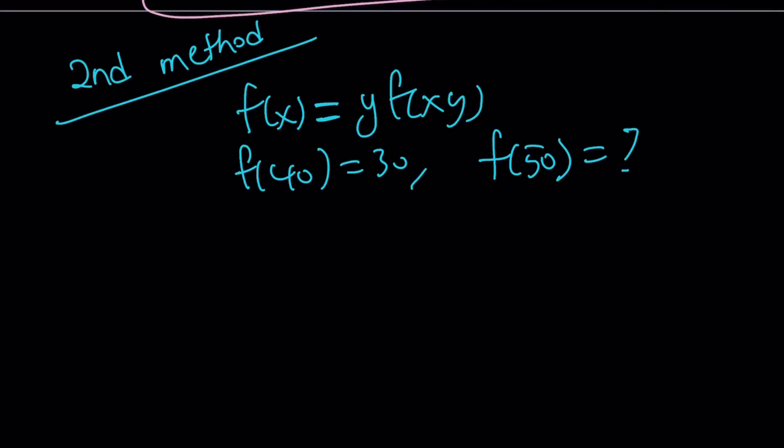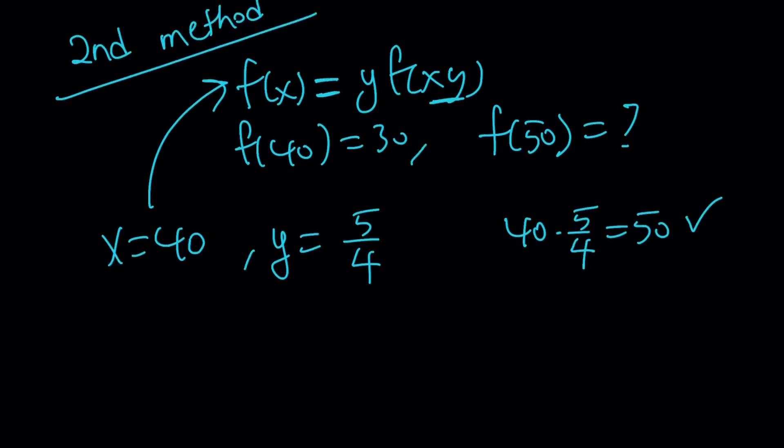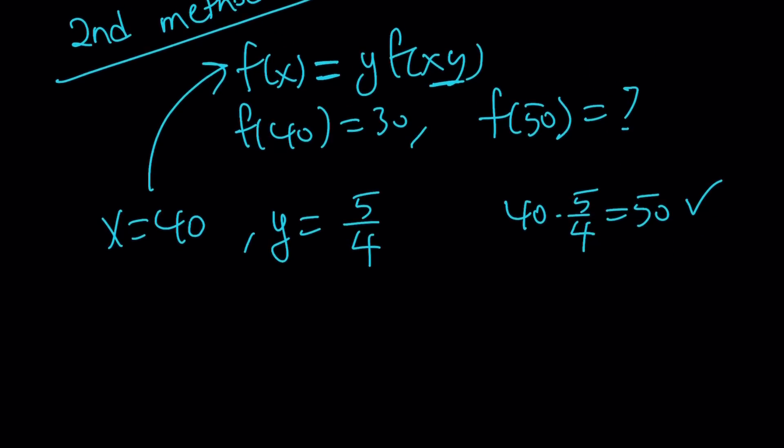Anyways, so for my second method A, I'm going to do the following. I'm going to replace x with 40 in this equation and y with 5 fourths. And you might be questioning why. I mean, seriously, no pun intended. Like, why am I doing this? Because 40 times 5 fourths is equal to 50. Isn't that awesome? And I do need f(50). Cool. It's going to work because we have an xy here. You see? So let's go ahead and replace that. f(40) equals y, which is 5 fourths, multiply by f(xy), which is 40 times 5 fourths. This is why I'm using 5 fourths for y.